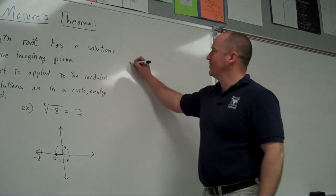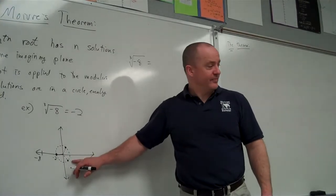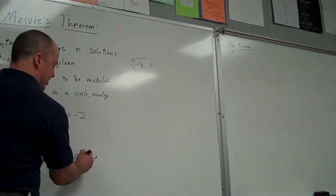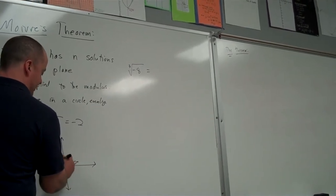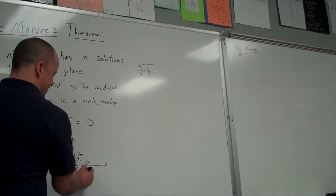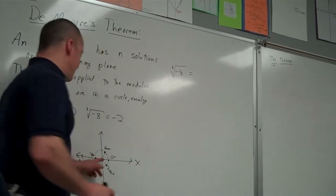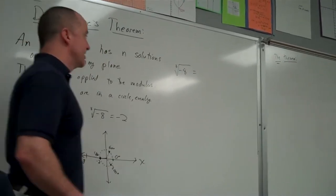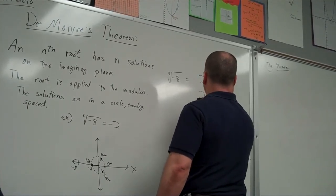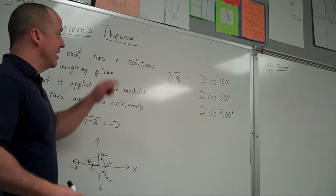The three points would be: 2 cis 180, 2 cis 60, and 2 cis 300. And those would be the three different roots of negative 8. We've got to go from standard position with 0 degrees here. If it's 120 back from 180, that would only be 60 degrees up. So the three points are at 180 degrees, 60 degrees, and 300 degrees. All of them would be positive 2, because it's absolute value — the distance from the origin.